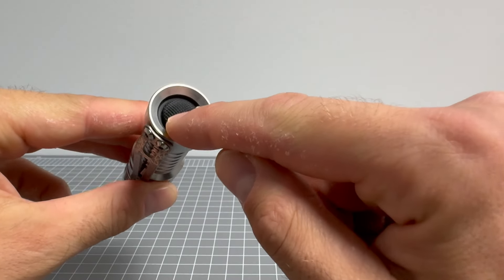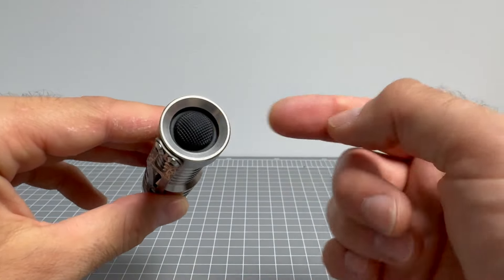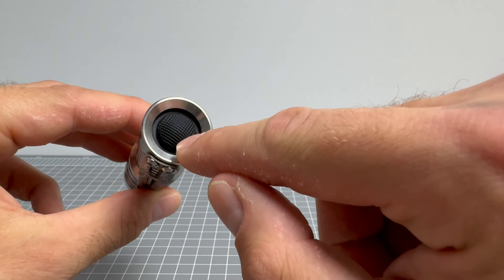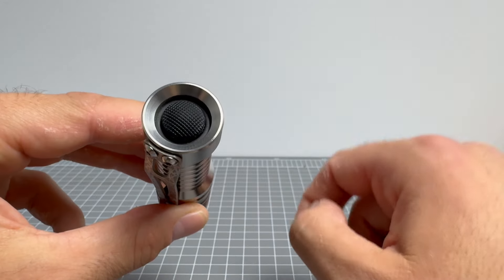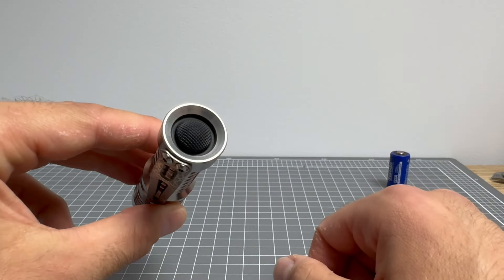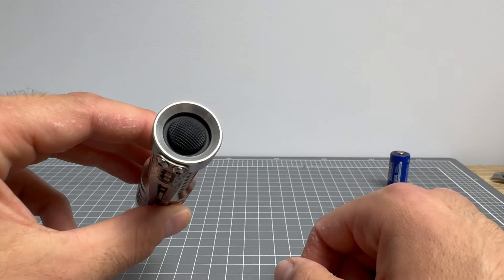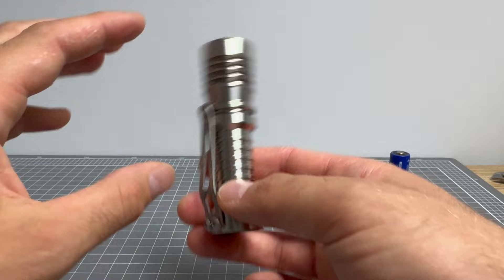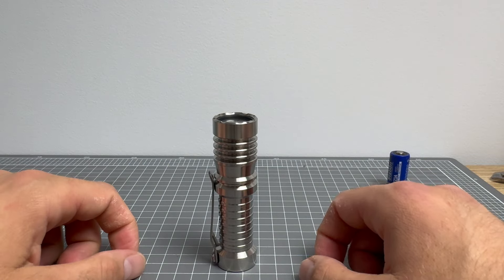We've got a McClicky switch underneath this rubber boot. And to replace the McClicky, all you would need to do is remove the rubber boot, remove the O-ring under there, unscrew the McClicky with a pair of needle-nose pliers or something, screw in the new one, replace the boot, then replace the O-ring, and you're good to go. And as you can see, it tail stands as well.